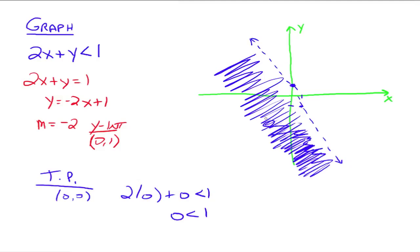So here's the idea: think of your inequality as an equation and graph the line. Determine if the line is solid or dashed — solid if there's less than or equal to or greater than or equal to, dashed if it's strictly less than or strictly greater than. Then take a test point clearly not on your line, substitute it into the original inequality, and shade the side that gives a true statement.